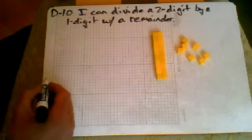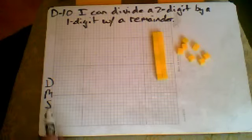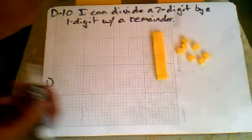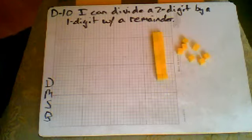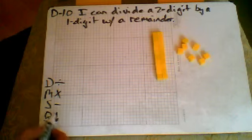So I'm going to write those steps down real quick: dirty, monkeys, smell bad, and those steps totally correlate with the process of using manipulatives. So we have divide, multiply, subtract, and bring down.